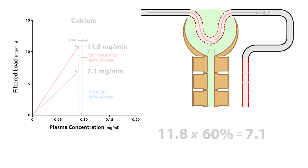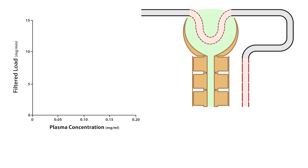The same holds true for any substance that is bound to plasma proteins. For example, 30% of total plasma magnesium is bound to plasma proteins, while the other 70% is ionized and freely filtered. Likewise, 20% of total plasma phosphate is bound to plasma proteins and is not filtered, while the other 80% is ionized and freely filtered.